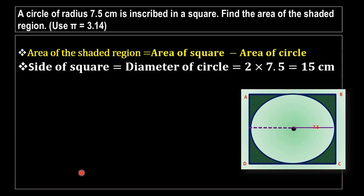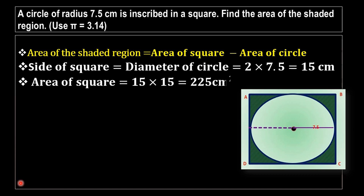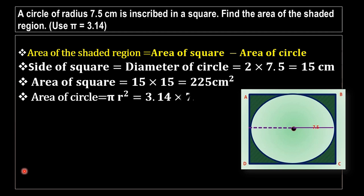Now, the area of the square equals side squared, which is 15 × 15 = 225 cm².